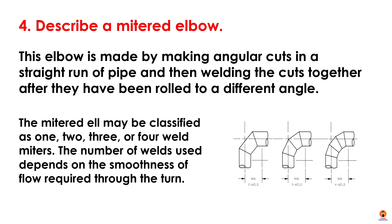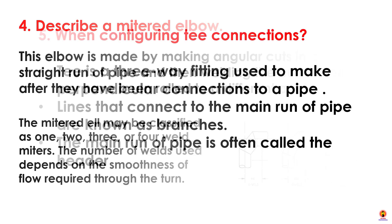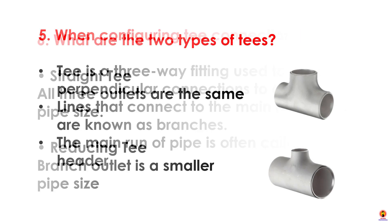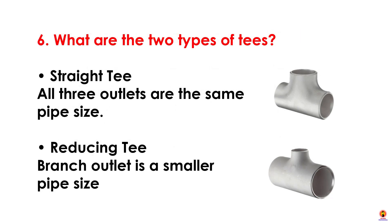When configuring a T-connection: a T is a three-way fitting used to make perpendicular connections to a pipe. Lines that connect to the main run of pipe are known as branches. The main run of pipe is often called the header. What are the two types of tees? A straight tee has all three outlets at the same pipe size. A reducing tee has a branch outlet at a smaller pipe size.